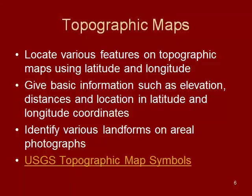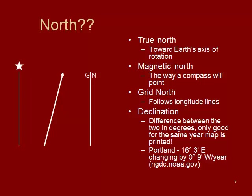Returning to our slides: some things you're going to see on these maps include north arrows. You'll notice on the map that you have multiple different types of north — three different ones. The first is called true north, which points toward the Earth's axis of rotation. True north doesn't change much in a human lifetime, maybe on a thousands-of-years timescale. Whereas magnetic north does change — on a daily or yearly basis.